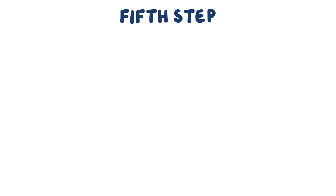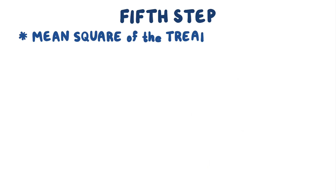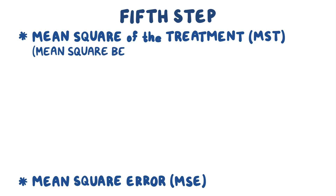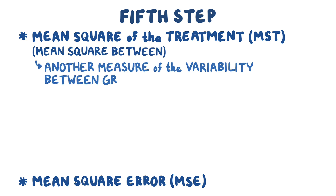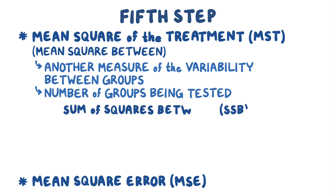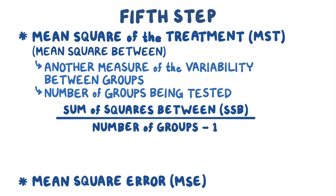The fifth step is to find the mean square of the treatment (MST) and the mean square of the error (MSE). The MST, also known as mean square between, measures variability between groups while accounting for the number of groups. It's calculated by dividing the SSB by its degrees of freedom, which is the number of groups minus 1. Since the SSB is 350 and there are three groups, the MST is 350 divided by 2, which equals 175.